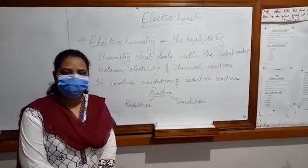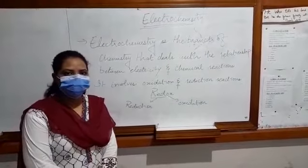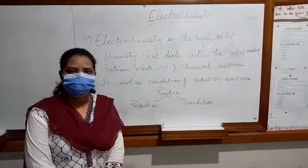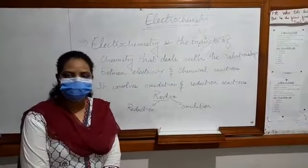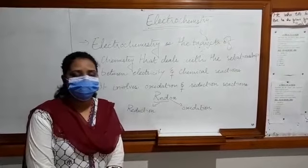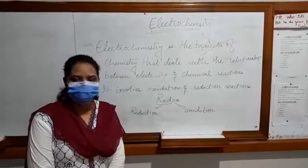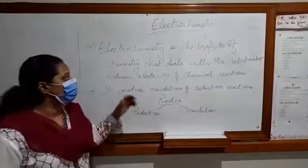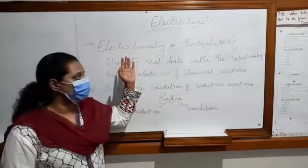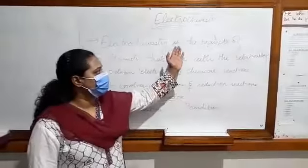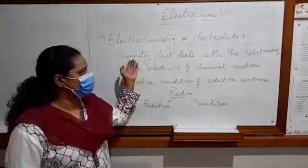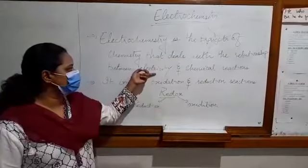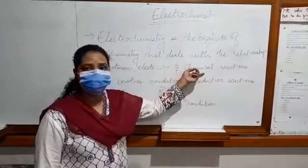Good morning students, hope you people are doing well in this crisis time. Today we are going to start another chapter — electrochemistry. As the name suggests, it involves two things: electricity and chemical reactions. Electrochemistry is defined as the branch of chemistry that deals with the relationship between electricity and chemical reactions.